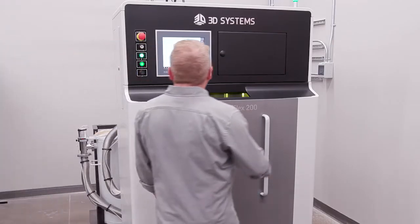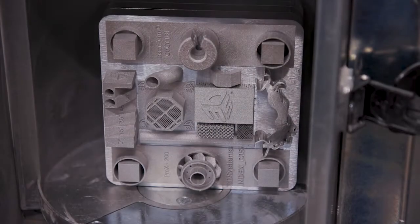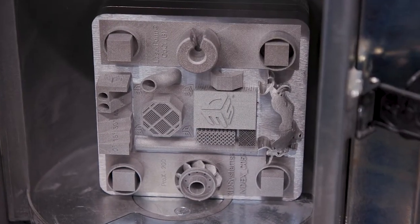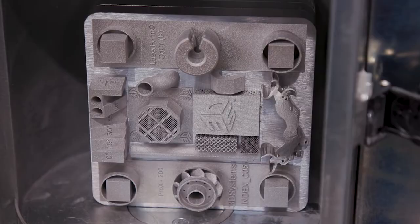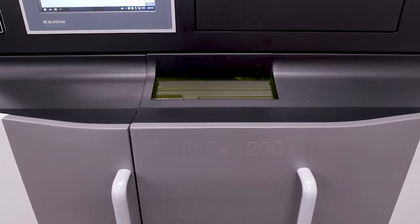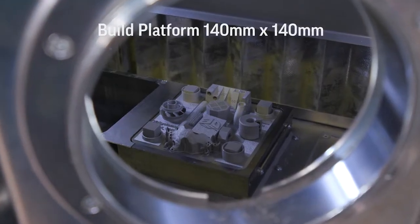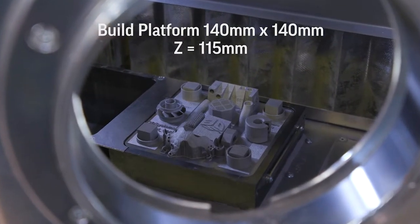This is a DMP Flex 200. The Flex 200 is a relatively small system with a lot of power. You've got a build platform of 140 by 140, with a Z height of 115 millimeters tall.